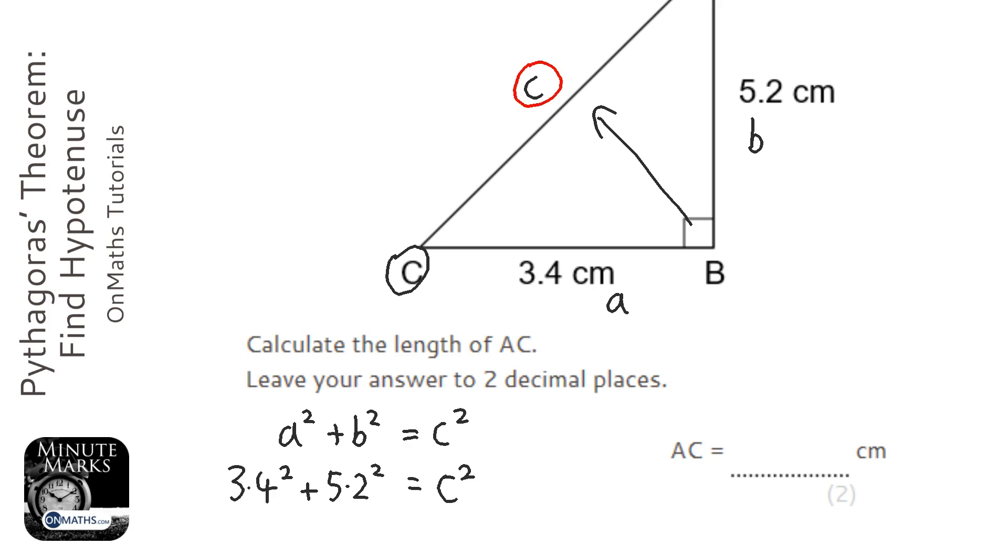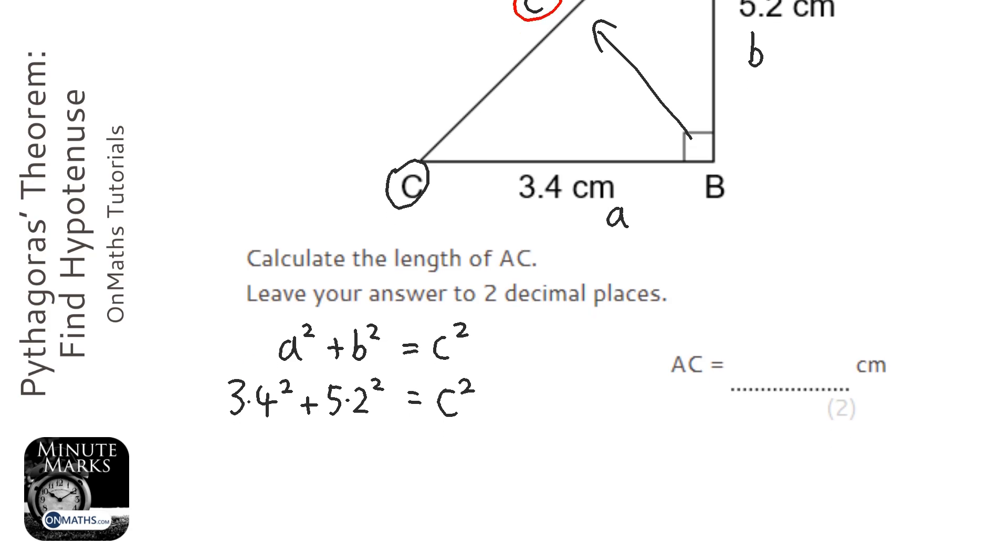Okay, let's do our lines. And I'm going to type in on my calculator 3.4 squared plus 5.2 squared, and that gives me 38.6 equals c squared.